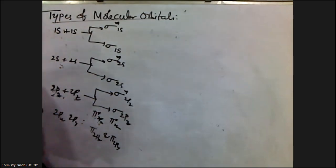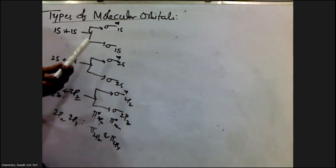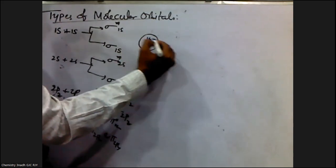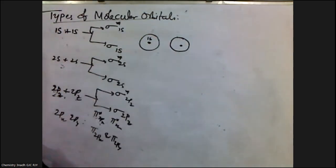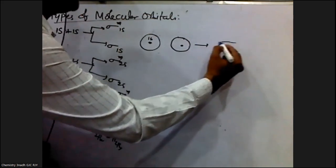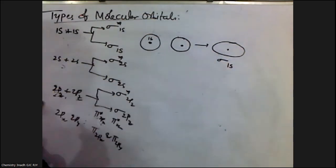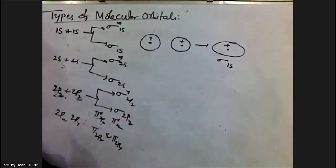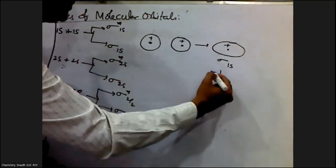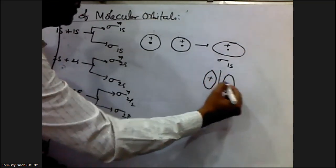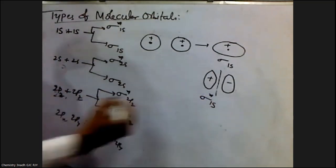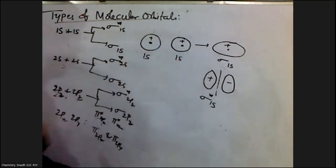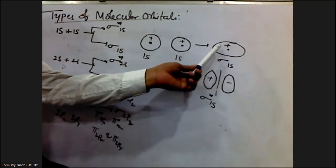Looking at the shapes: this is the 1s atomic orbital with the nucleus at center, and similarly another 1s atomic orbital. When they combine, the molecular orbital formed is sigma 1s — this is the sigma 1s bonding molecular orbital. For the anti-bonding molecular orbital, sigma star 1s has a node between the two nuclei. The shape of sigma 1s is like a continuous electron density between the two nuclei.